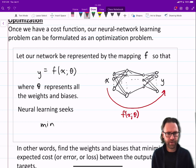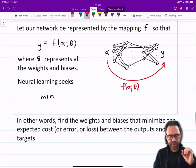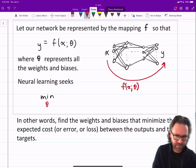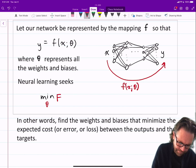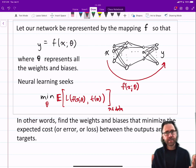Neural learning seeks to minimize, with respect to connection weights and biases, the expected value of the loss between f(x)—or the output of the network—and the corresponding target over the dataset. Minimize the expected loss between the network output and its target over the dataset.